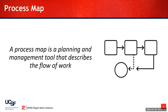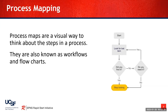What we just looked at was a process map. A process map is a planning and management tool that describes the flow of work. Process maps are a visual way to think about the steps in a process. You may have also heard these referred to as workflows or flow charts, and you can see to the graphic on the right an example of a process map, where there is a starting point, steps in a process, decisions in a process, and the end of the process.